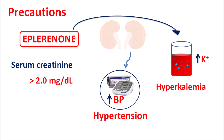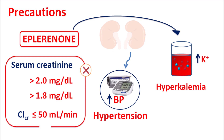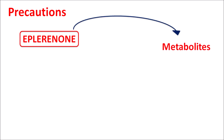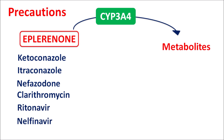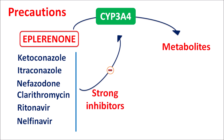If serum creatinine is greater than 2 mg/dL in men, or greater than 1.8 mg/dL in women, or creatinine clearance is less than or equal to 50 mL per minute, these conditions indicate decreased renal function and eplerinone is contraindicated, as it can produce severe hyperkalemia. Another important precaution involves drug interactions: eplerinone is metabolized by the CYP3A4 enzyme. Strong CYP3A4 inhibitors — such as azole antifungals (ketoconazole, itraconazole), antidepressants (nefazodone), antibiotics (clarithromycin), and antivirals (ritonavir, nelfinavir) — are all contraindicated with eplerinone.